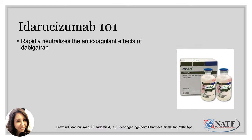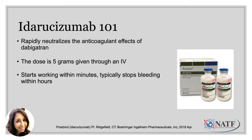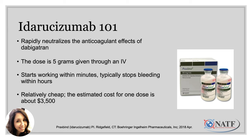Idarucizumab binds and rapidly neutralizes the anticoagulant effect of dabigatran. The dose is 5 grams, given intravenously. It starts working within minutes, and hemostasis — your body's normal ability to form clots — is typically achieved within hours. The estimated cost for one dose is about $3,500, and we say that it's relatively cheap because some of the other products we're going to talk about can cost upwards of $30,000 to $50,000 for just one dose of medication.